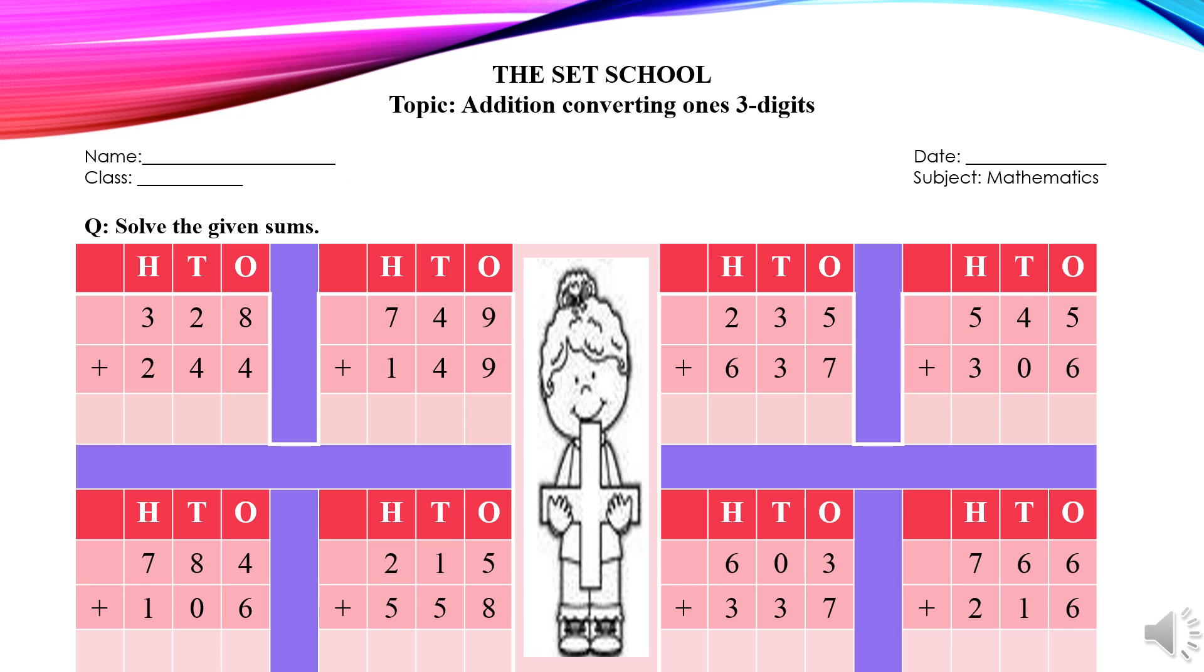Here we have an activity. In this activity, we have few sums of addition converting ones, three digits. What you all have to do? You all have to copy down the sums in your notebooks and have to solve it by yourself. But, remember to do your work in good handwriting. And one more thing. You have to keep your copy safe. Best of luck. Allah hafiz.